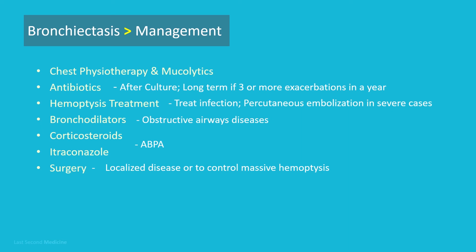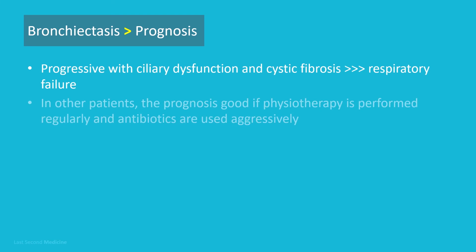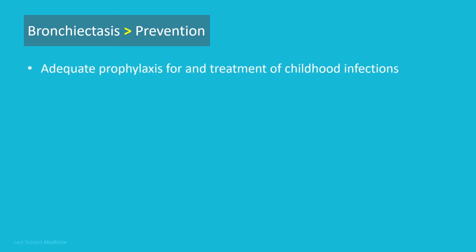Surgery may be indicated in localized disease or to control severe haemoptysis. The disease is progressive when associated with ciliary dysfunction and cystic fibrosis, eventually causing respiratory failure. In other patients, the prognosis can be relatively good if physiotherapy is performed regularly and antibiotics are used aggressively. As bronchiectasis commonly starts in childhood following measles, whooping cough, or primary tuberculosis infection, adequate prophylaxis and treatment of these conditions — along with early recognition and treatment of bronchial obstruction — are essential.